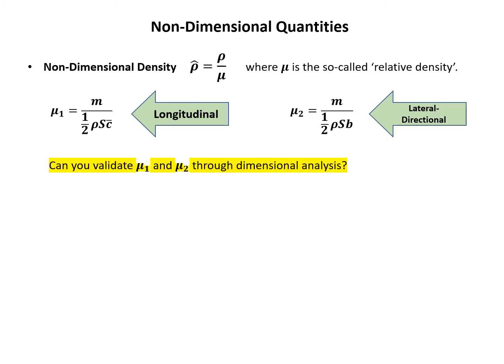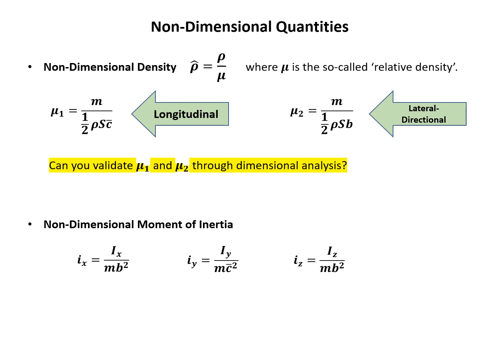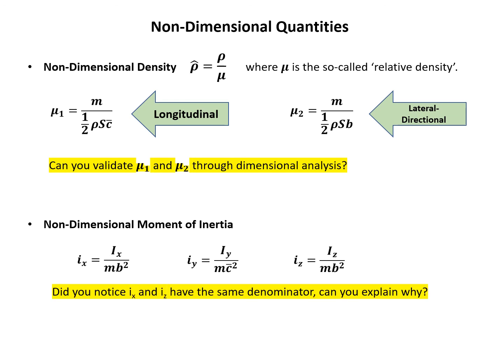I give you a task: can you validate that μ1 and μ2 have the same dimension as density through dimensional analysis? The last group of non-dimensional quantities are the non-dimensional moments of inertia: small ix, small iy, and small iz. If you look at the denominators, there is a slight difference — c̄ squared versus b squared. The reason is the same: iy is for the longitudinal motion, so c̄ squared is used, while ix and iz are for the lateral-directional motion, so b squared is used. Can you validate that the denominator has the same dimension as the moment of inertia, as practice for dimensional analysis?